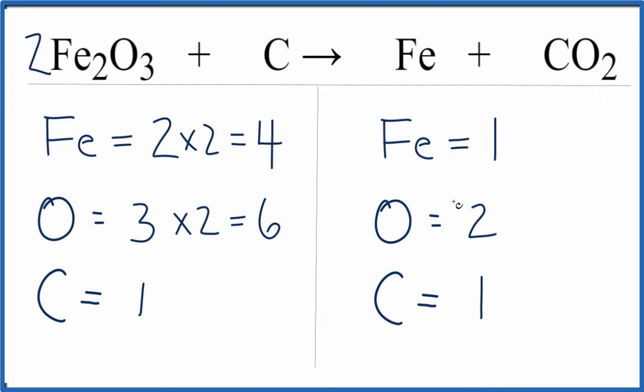Now when I go back to the products, if I want to get this to be equal to six, I'll just multiply it by three. That would give me six. So I'll put a coefficient of three in front of the CO2, two times three, that gives me six.